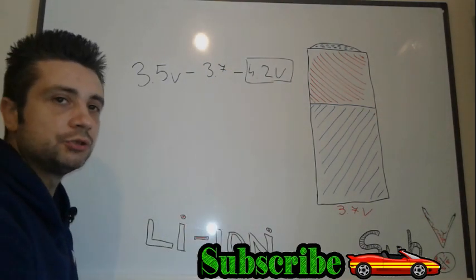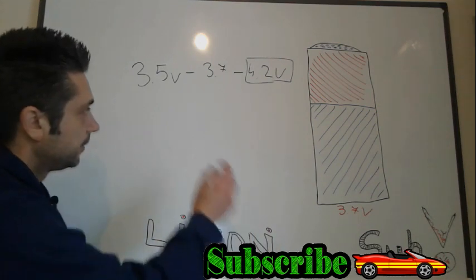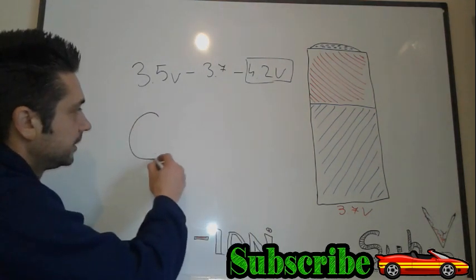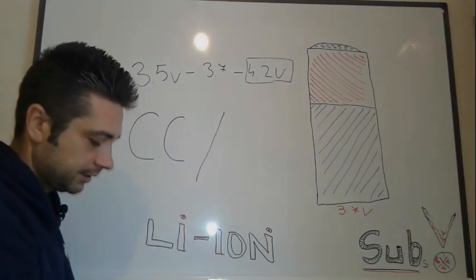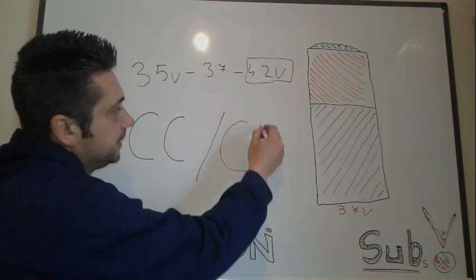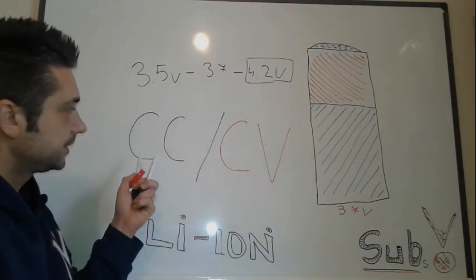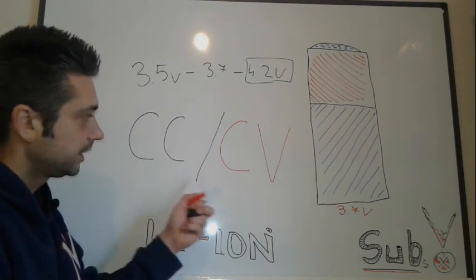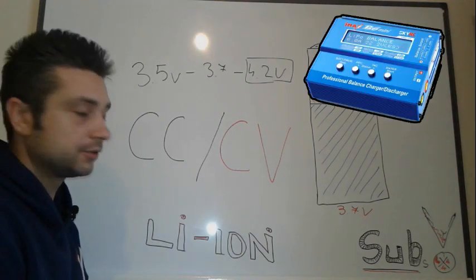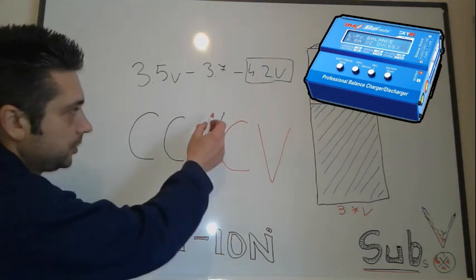To be able to charge the battery, it's a different process than you ever seen before. First you're gonna have some CC and then you're gonna have some CV. CC stands for constant current and CV stands for constant voltage. This is a three-step charging procedure.